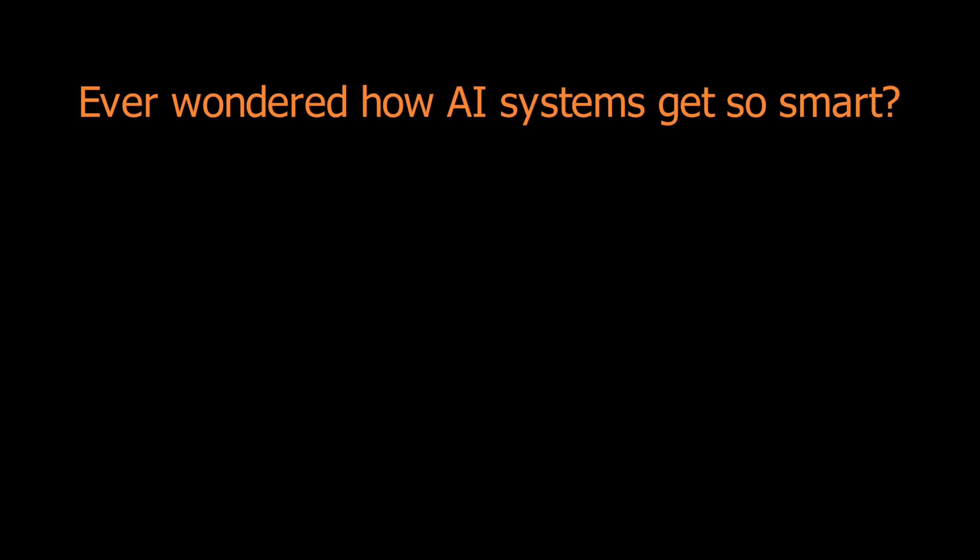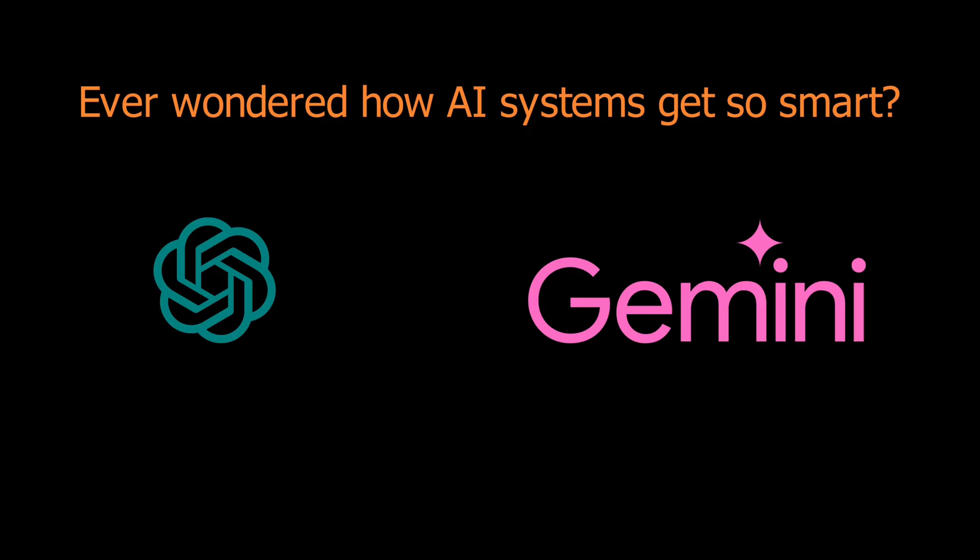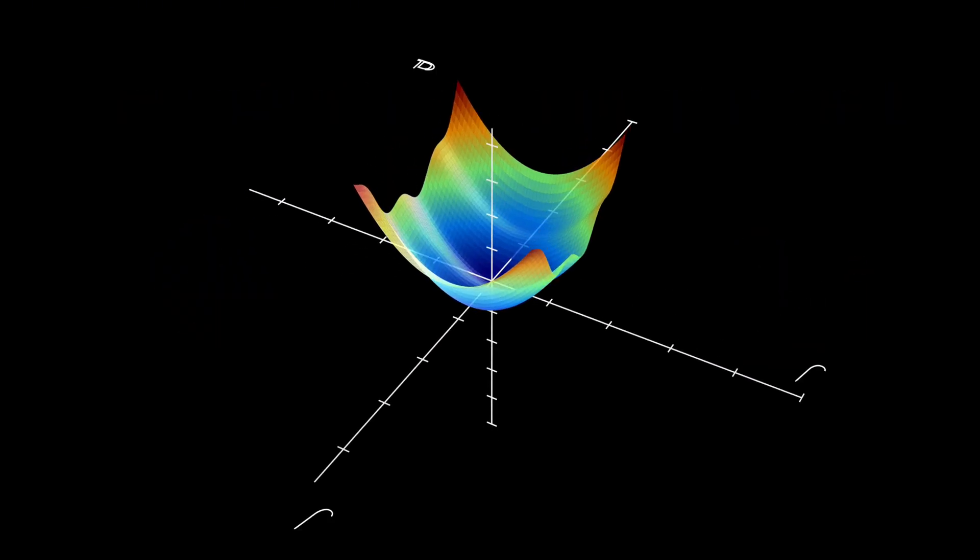Have you ever wondered how artificial intelligence systems, like ChatGPT or Google's Gemini, are trained to become so smart? Well, take a look at this animation.